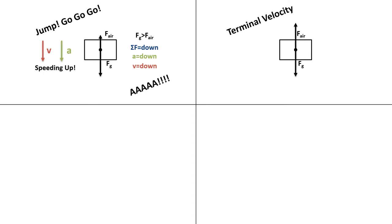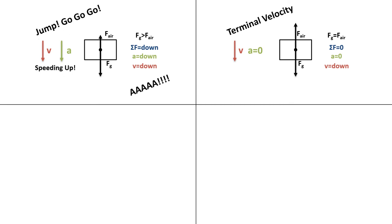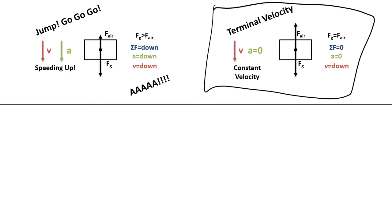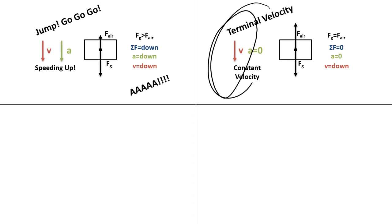Why doesn't air resistance continue to increase after that? Because your weight is equal to your air resistance — your net force is zero. If your net force is zero, your acceleration is zero, so you're not speeding up anymore. The reason air resistance was growing was because we were going faster. Now net force is zero, so we're not accelerating, but we're still moving downward — not stopping. We're moving downward with a constant velocity, which means we're in equilibrium.